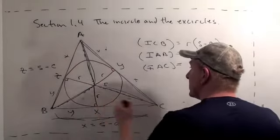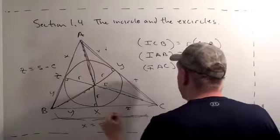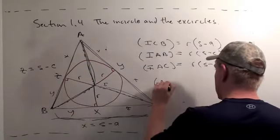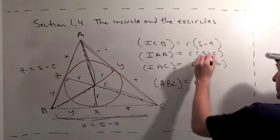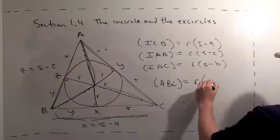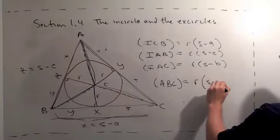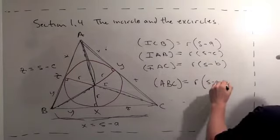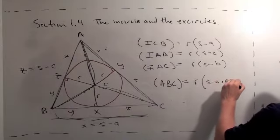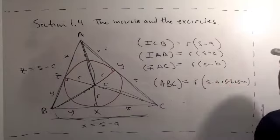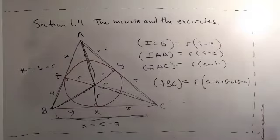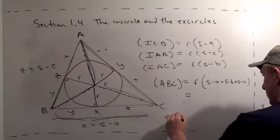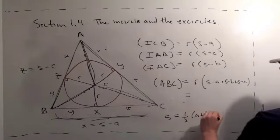But you'll notice that these three triangles add up to be the whole triangle. So, the area of ABC equals R times (S minus A plus S minus B plus S minus C). Which is, if you remember what S was, S was equal to one-half (A plus B plus C).